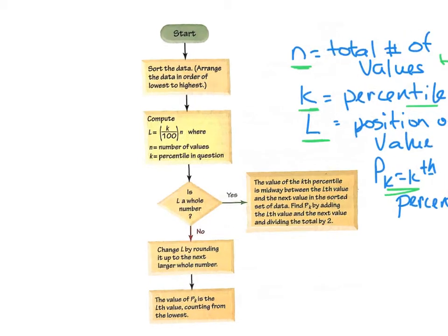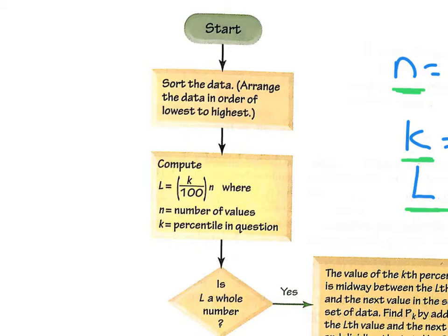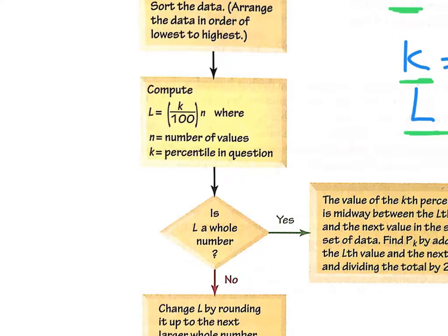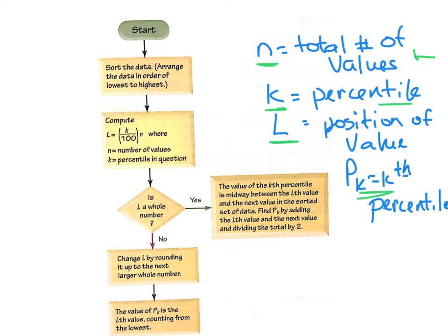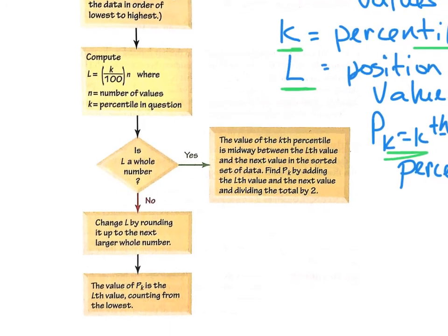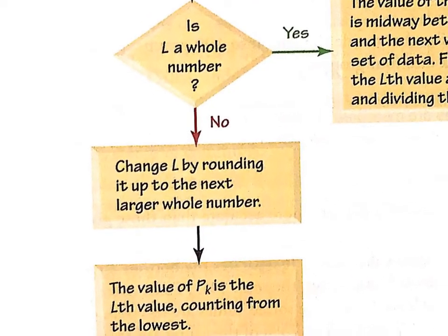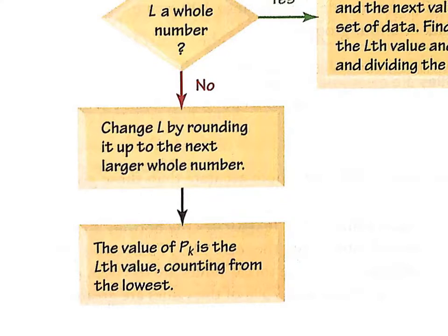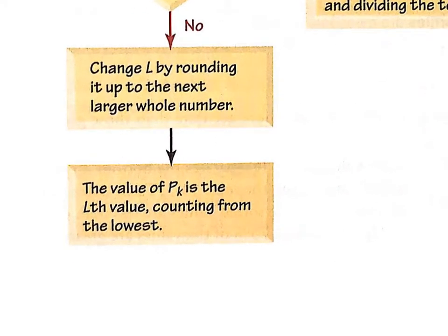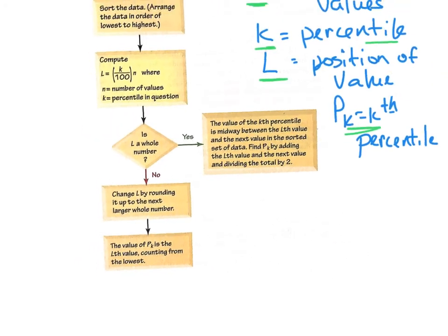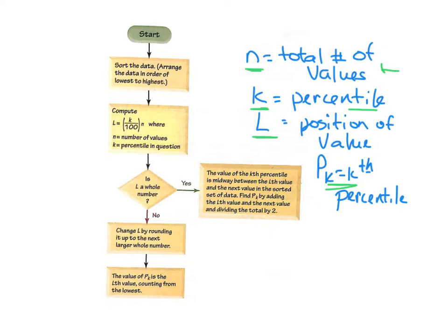Let's go through this chart real quick. You start by sorting the data least to greatest. There's our formula we're going to use: K over 100 times N, which is how many numbers there are. If we get a whole number, it's midway between the value that you get and the next value up. So it's just the average of the two. If it's not a whole number, you always round up no matter what your decimal is. The value of the percentile is the Lth value after you round up, counting from the lowest. It's easier to show you probably.